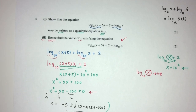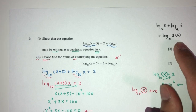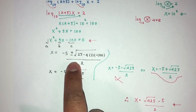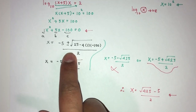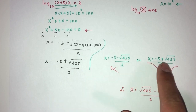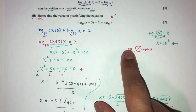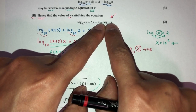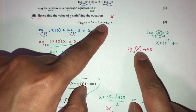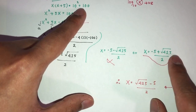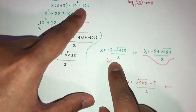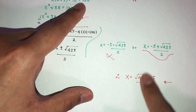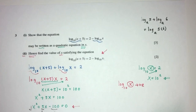And this is your answer for question number 3. The takeaway is we need to know the laws of logarithms and how to use the quadratic formula. Also understand that x can only be positive because log can only take a positive value. Hence the negative answer is rejected, and we take only the positive solution as our answer.